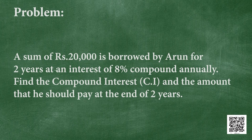Let us see how to calculate compound interest with the following problem. A sum of rupees 20,000 is borrowed by Arun for 2 years at an interest of 8% compounded annually. Find the compound interest and the amount he should pay at the end of 2 years. Note that compound interest is always calculated on the amount of the immediate previous year.